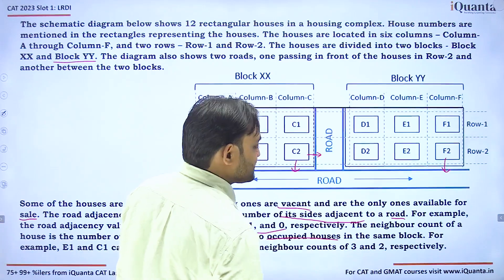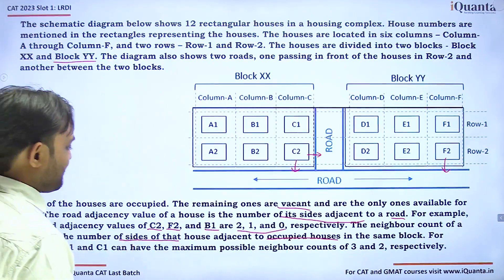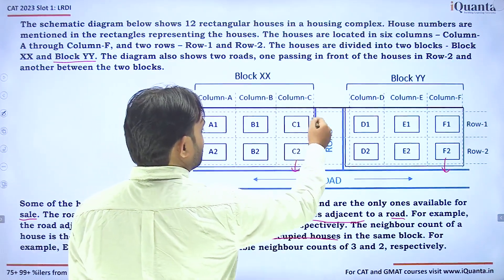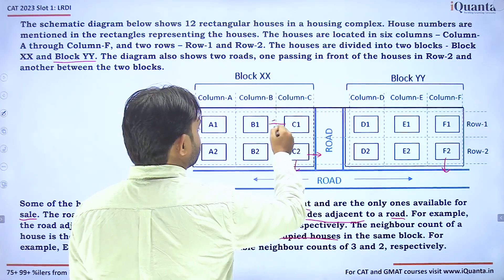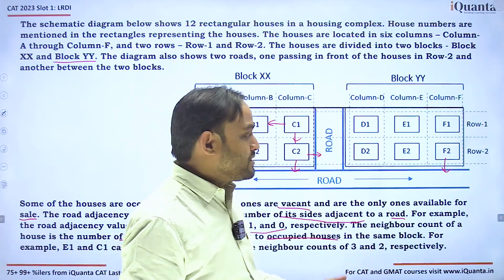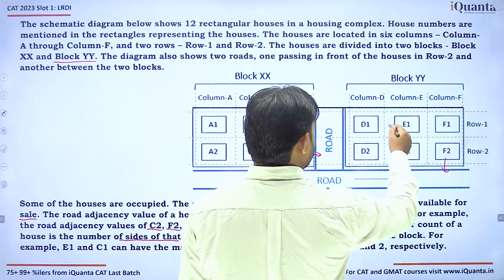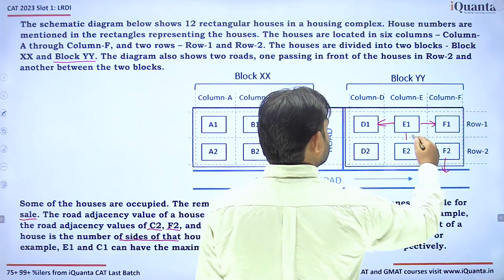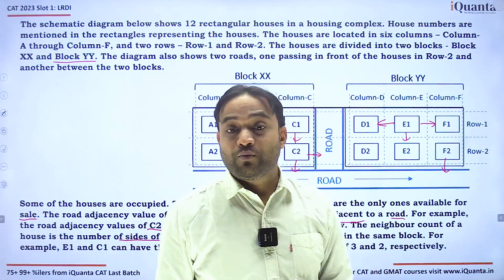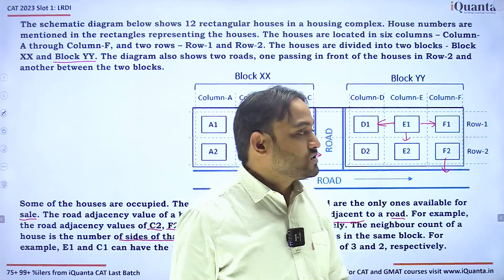The neighbor count of a house is the number of sides of that house adjacent to occupied houses in the same block. For example, E1 and C1 can have maximum possible neighbor counts of 3 and 2 respectively. C1 can have two neighboring occupied houses adjacent to its sides, while E1 can have up to 3.